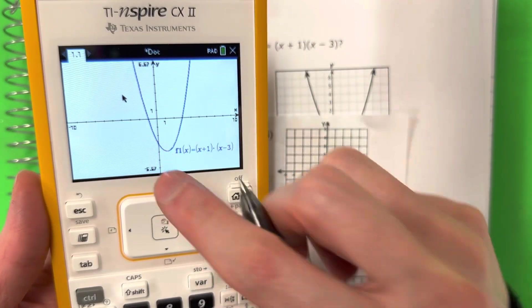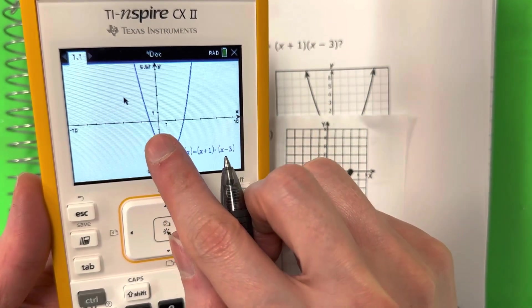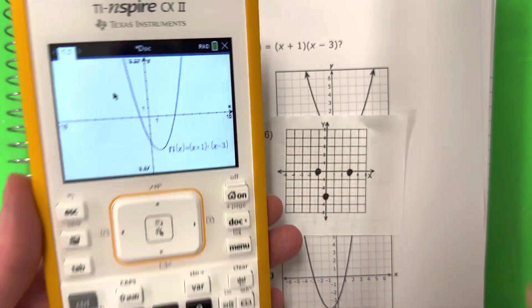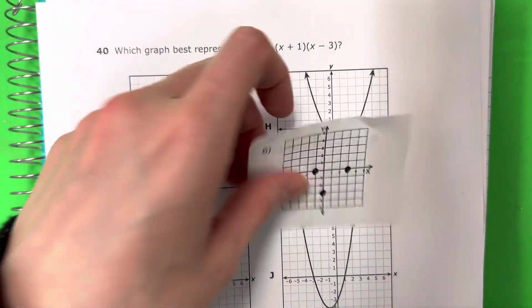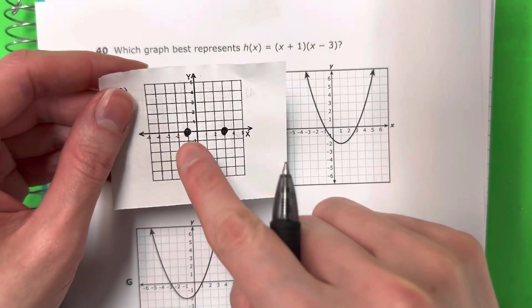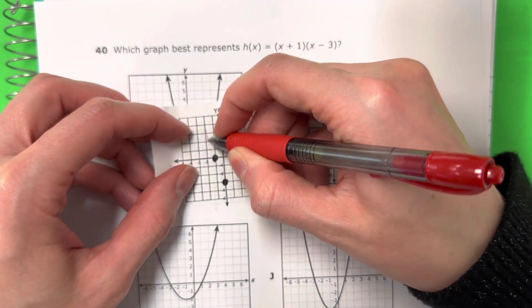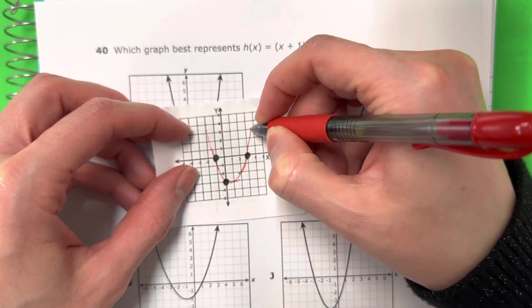el y-intercept, it's down 3, abajo 3. So that's negative 3. So I need, necesito, a graph, una gráfica that has these points, que tiene estos puntos, yes? And it needs, obviously it needs to be like a u, okay?